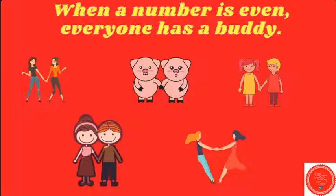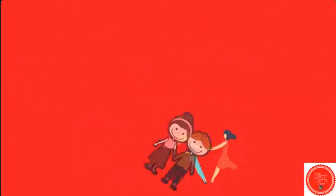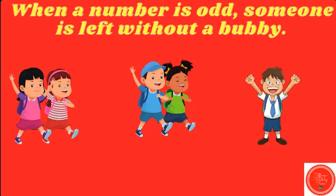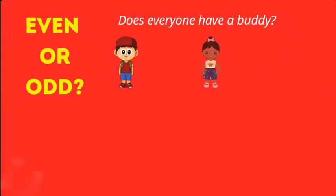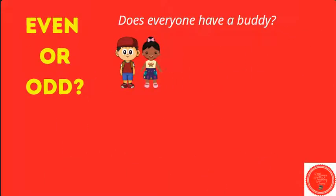When a number is even, everyone has a buddy. When a number is odd, someone is left without a buddy. Does everyone have a buddy here? Yes, there are two kids and they have a buddy. No one is left alone. That means the number two is an even number.